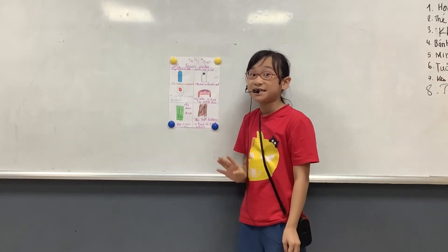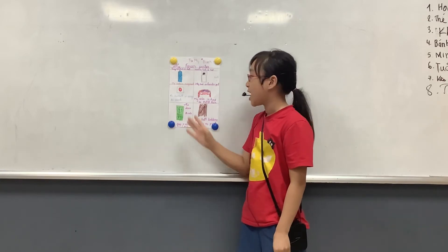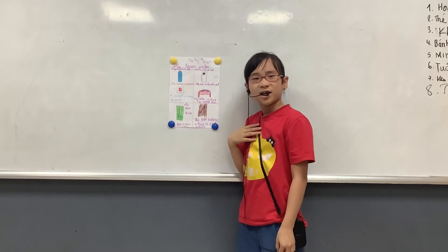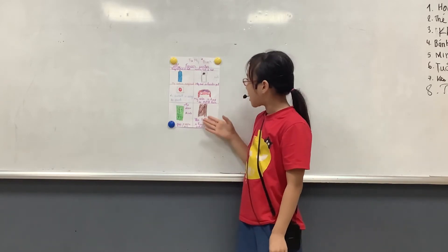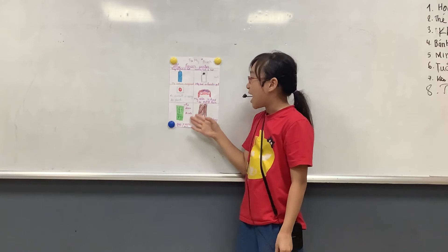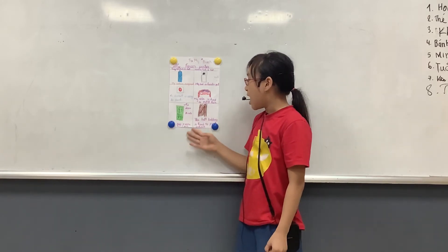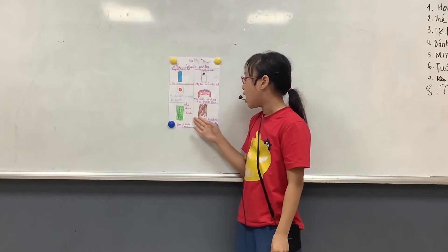And this is the doorbell. My house doesn't have a doorbell, but sometimes I push a doorbell and it's very easy to push or pull. And this is a door. A door is very easy to push and pull, and also the doorbell.